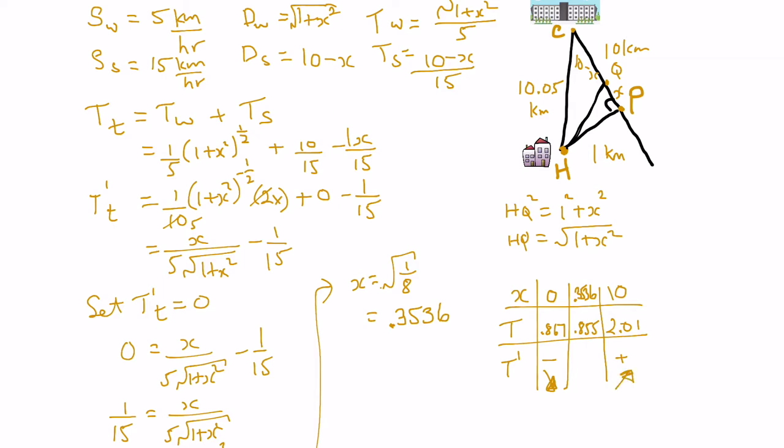And we know that if we put in 0.3536 into the first derivative, it's going to give us 0. So, the graph is level at that stage, so that is indeed a minimum.